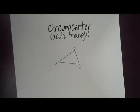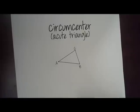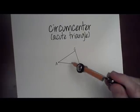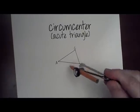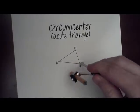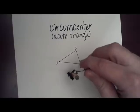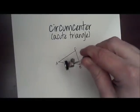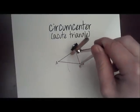Hey there, we're winding down our unit 6 review — just a couple left to do. This is going to be the circumcenter of an acute triangle. And to find the circumcenter, we need to construct the perpendicular bisectors of each side of the triangle.